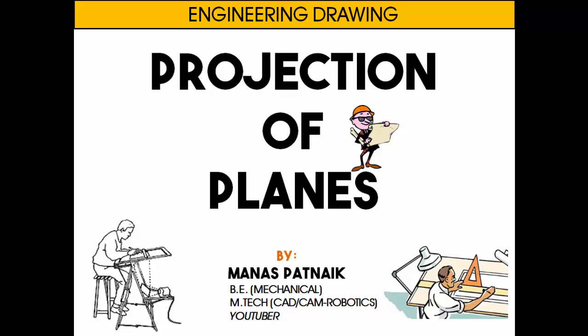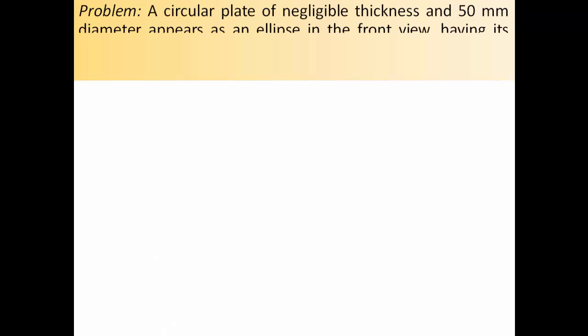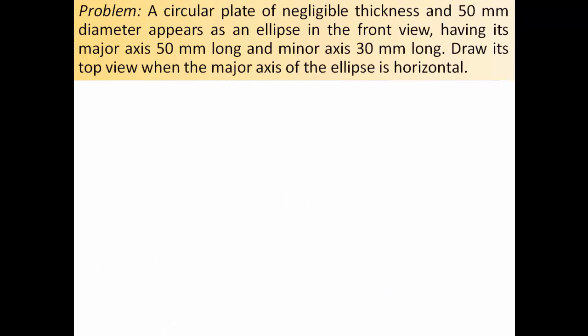Hi there, this is your friend and tutor Manas, and today I'm going to be continuing with my discussion on projection of plates. Specifically, we're going to be talking about a circular plate having negligible thickness. The problem goes like this: a circular plate of negligible thickness and 50 mm diameter appears as an ellipse in the front view, having its major axis 50 mm long and minor axis 30 mm long.